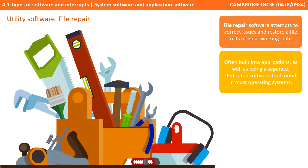Let's talk about file repair utility software. Files can become corrupt or damaged for any number of reasons. File repair software, as the name suggests, attempts to correct these issues and restore the file to its original or previous working state. A file repair facility is often built into certain applications, as well as typically being a separate dedicated utility tool found in most operating systems or from independent vendors.